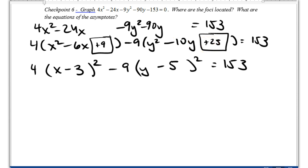Now, notice, because I added 9 times 4 to this side, I have to add it over here. And because I added negative 9 times 25 to this side, I have to add it to this side as well. So 9 times 25 is 225, and it's negative, so minus 225.